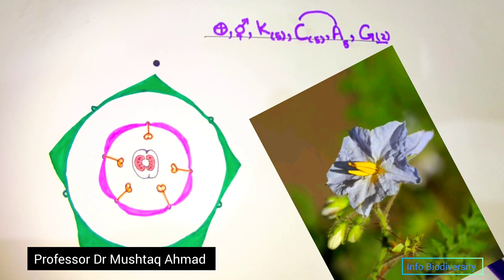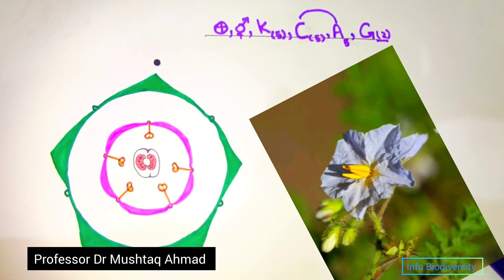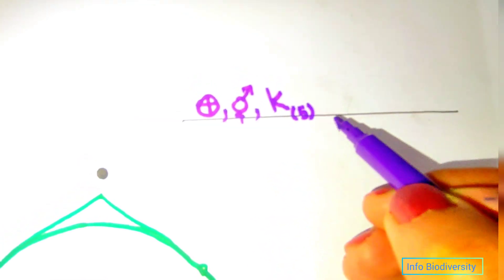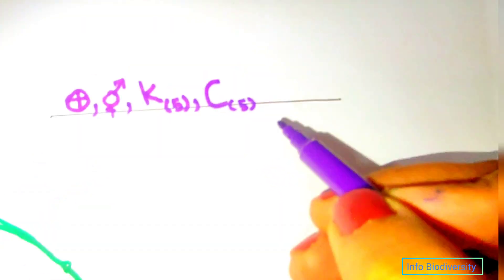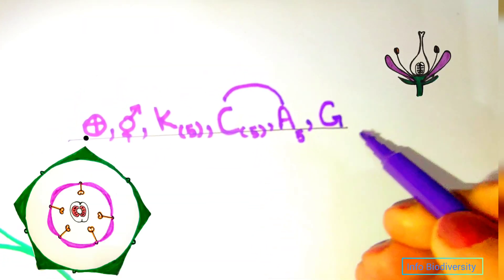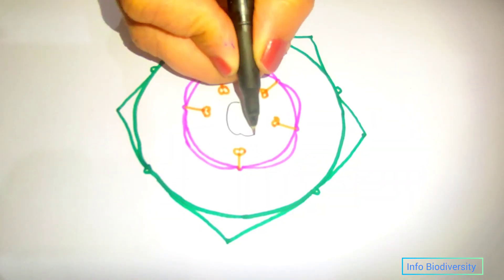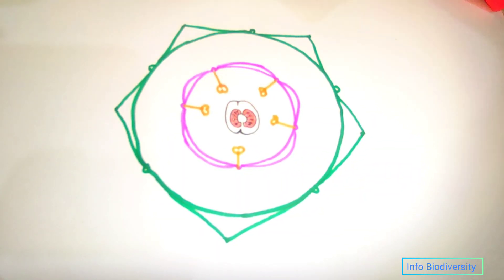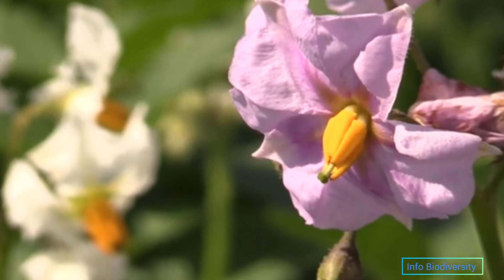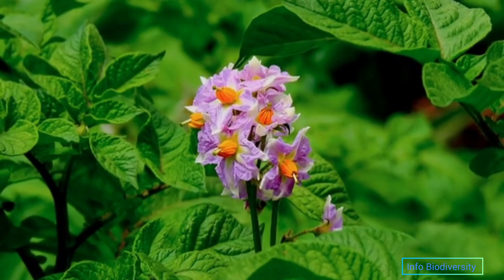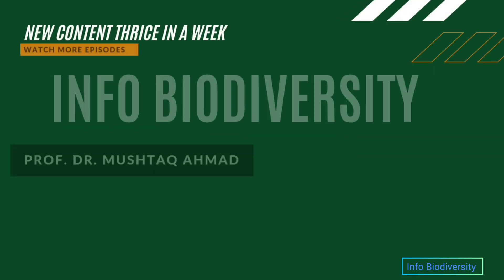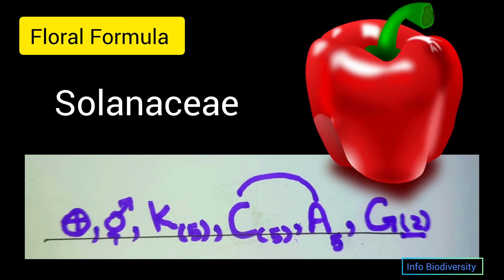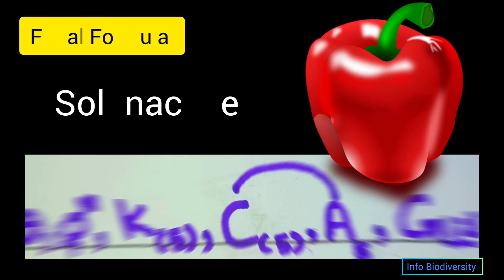Hi dear fellows, today I am going to explain the floral formula and floral diagram of family Solanaceae in the simplest and easy way for learning. Let's start the floral formula and floral diagram of family Solanaceae, which is commonly known as the potato, tomato, or capsicum family. First I will tell you the floral formula of family Solanaceae.